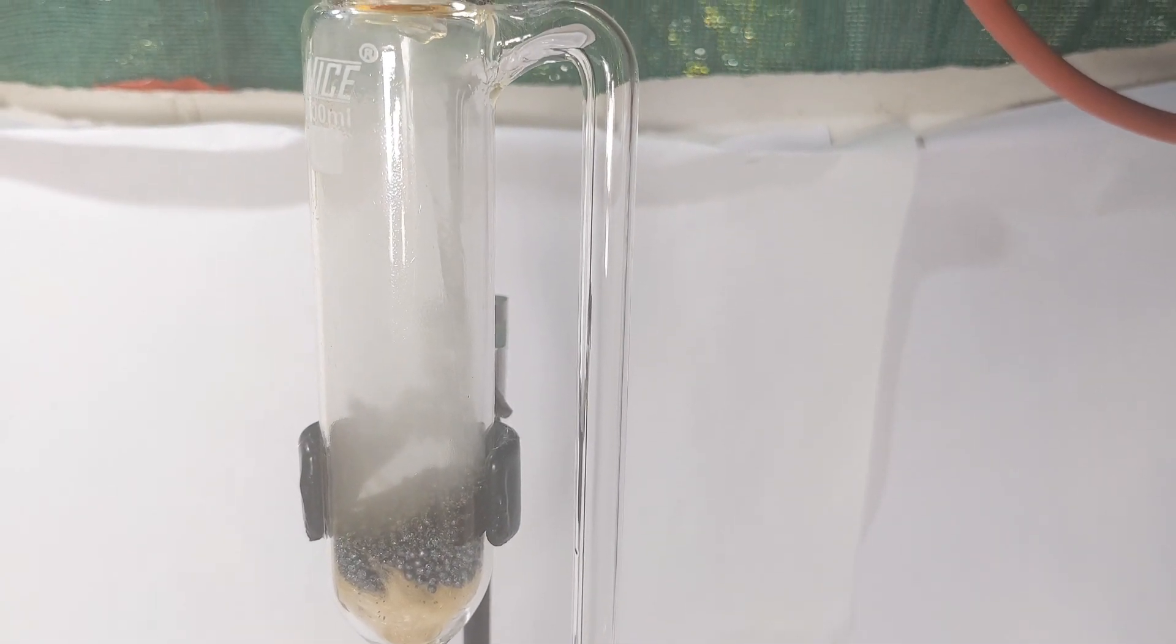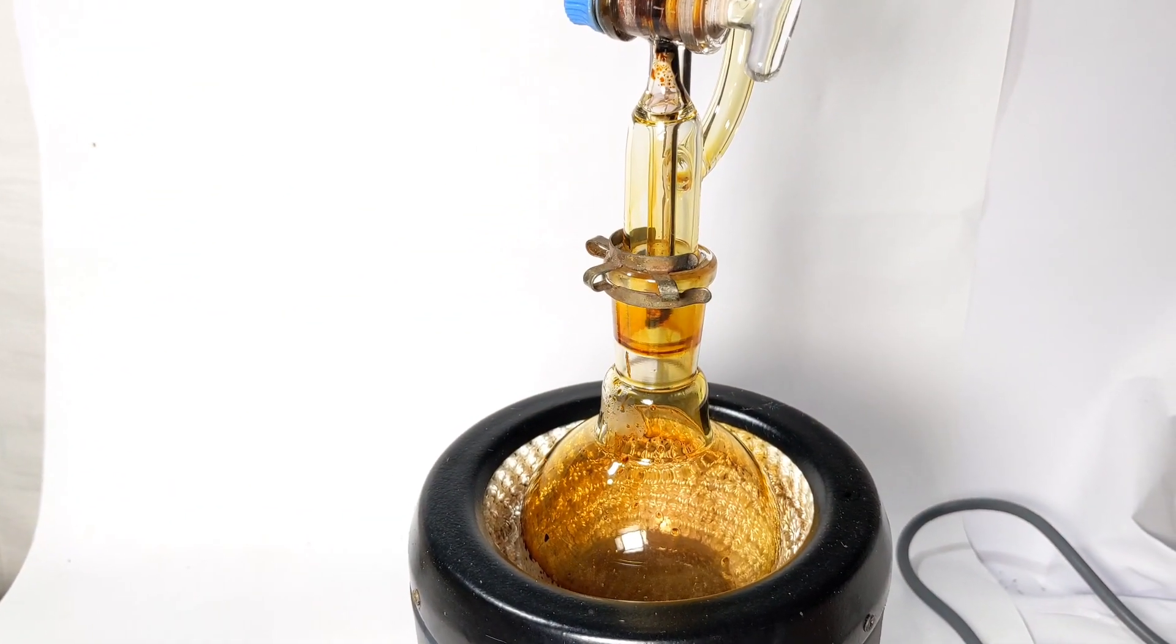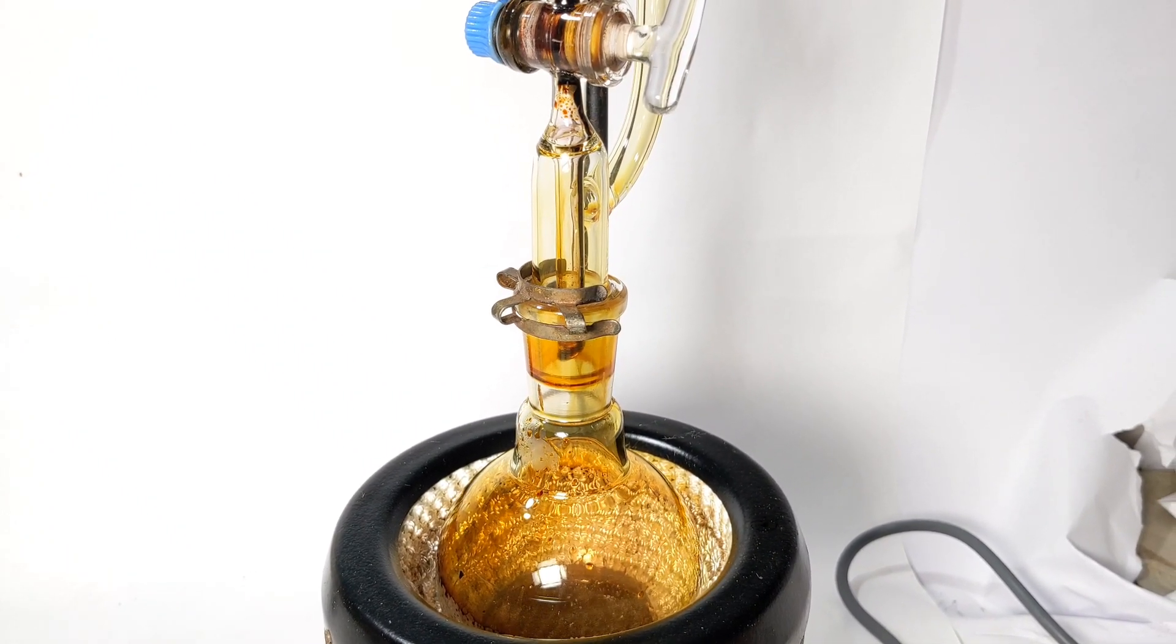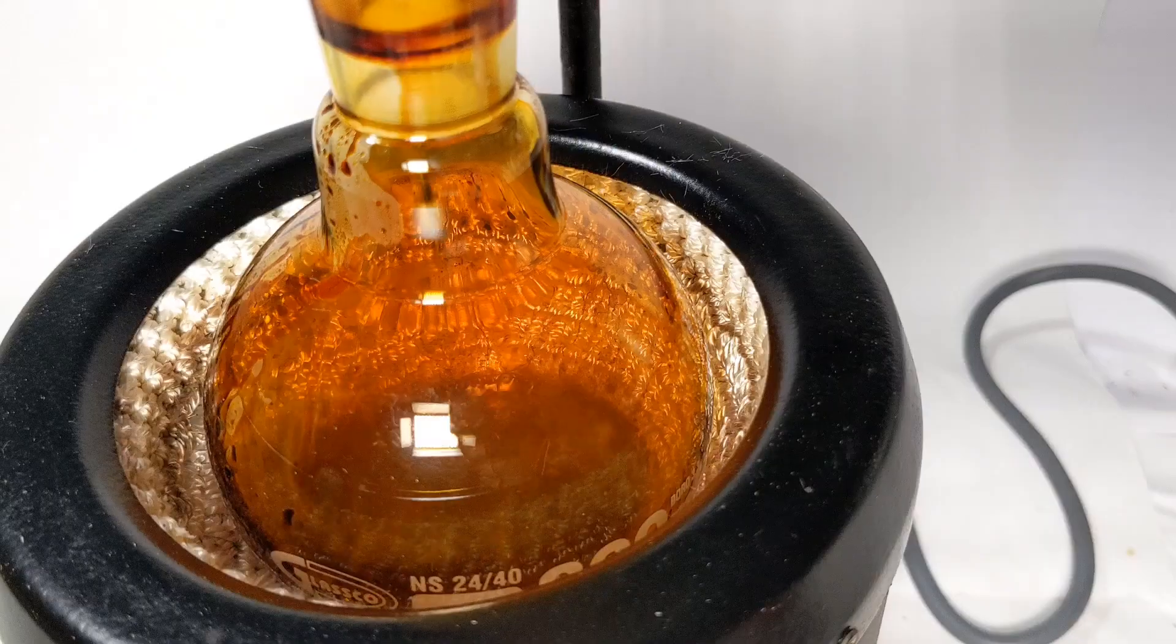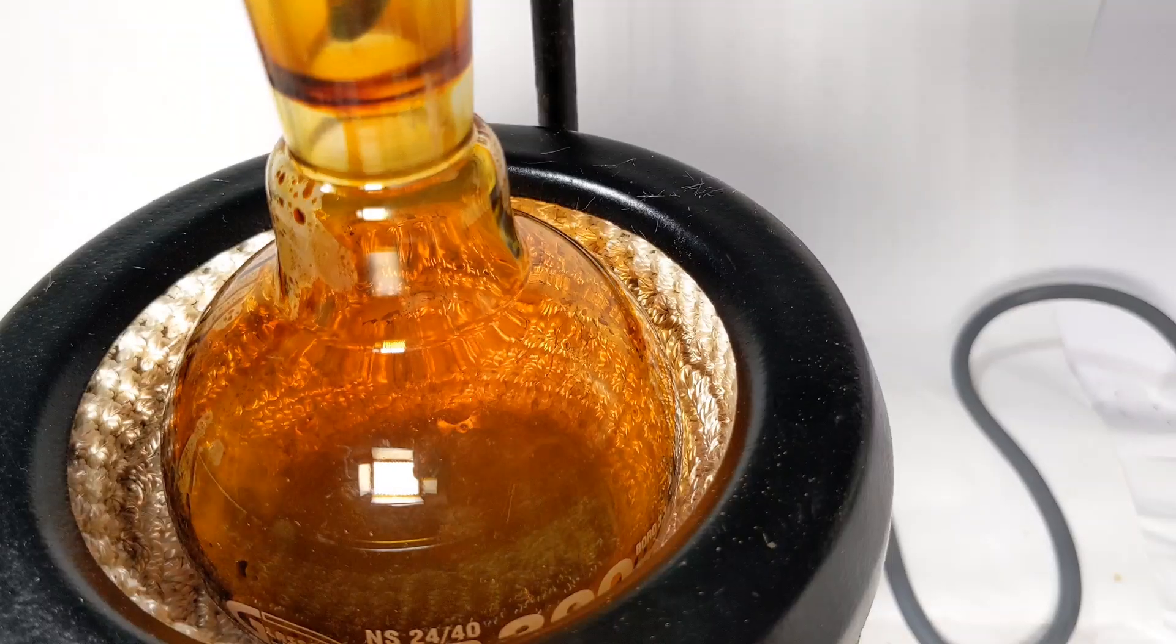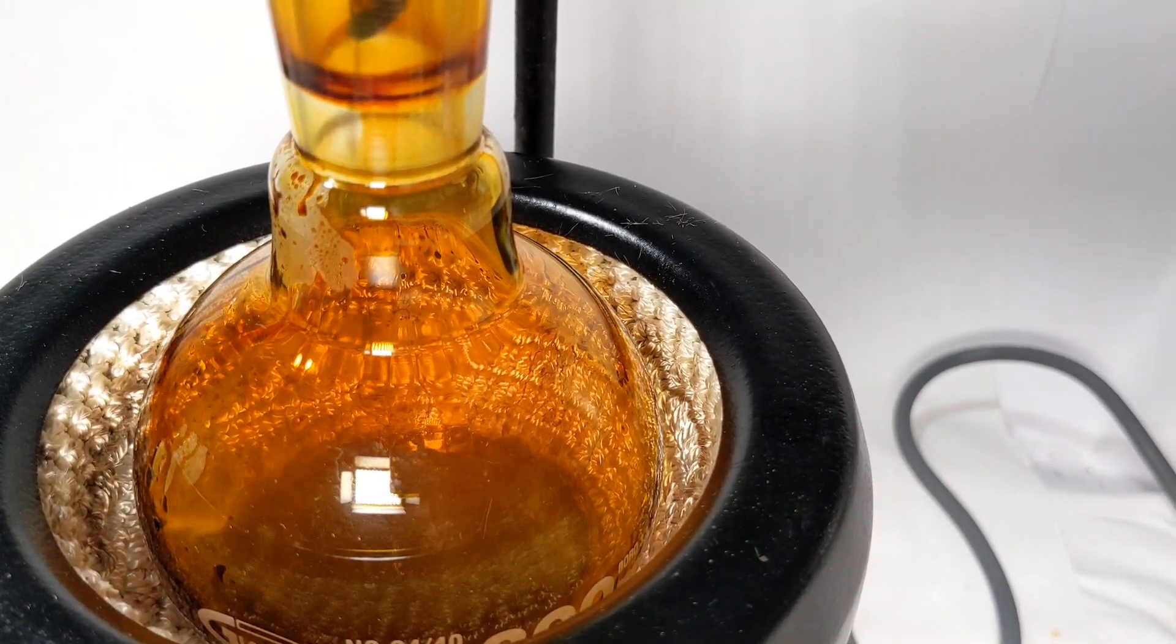When the iodine salts start to dissolve in the n-butanol, the knob of the funnel was opened and a steady drop of iodine in n-butanol was added to the red phosphorus. This causes an exothermic reaction and heat of the reaction is sufficient to cause the boiling of n-butanol into the funnel through the sidearm. Hence heating mantle was turned off.